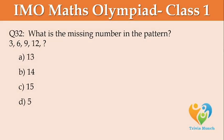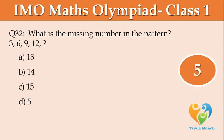What is the missing number in the pattern? 3, 6, 9, 12, ___. Option A: 13, Option B: 14, Option C: 15, Option D: 5.